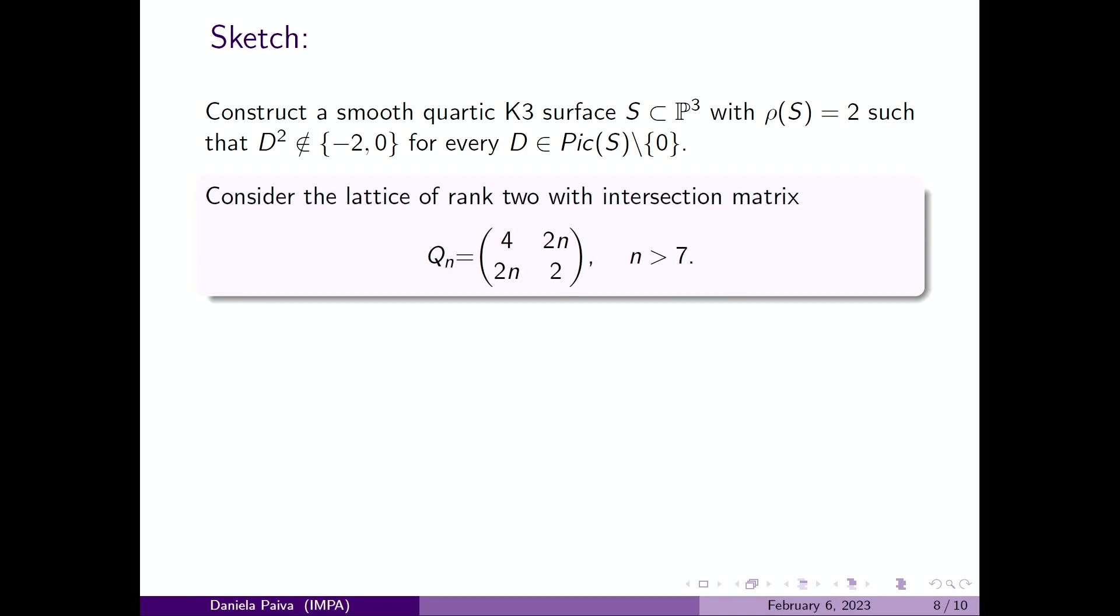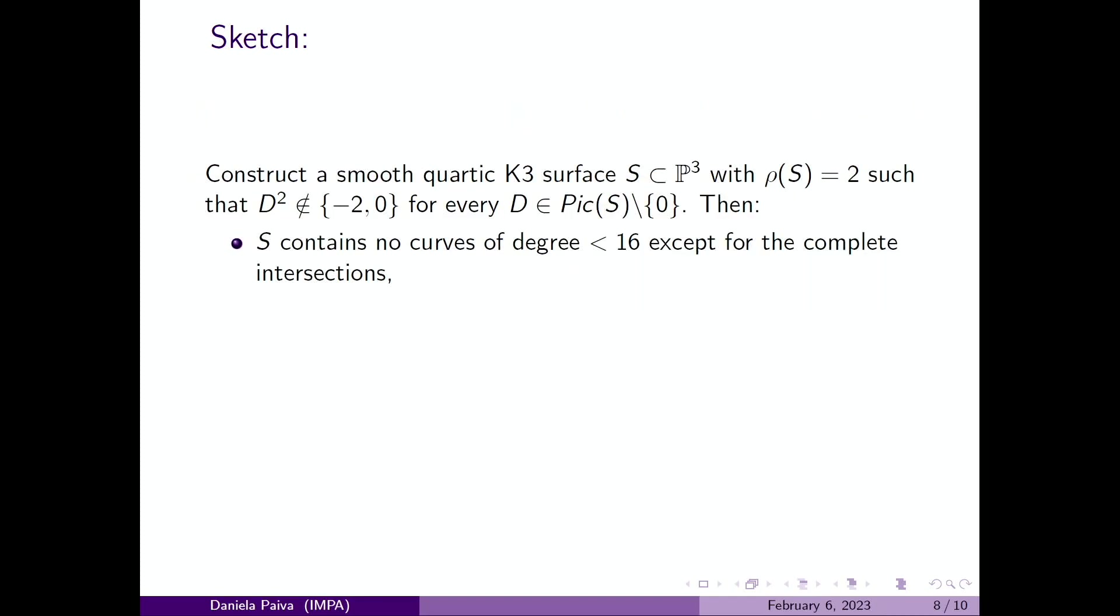The element of the Picard lattice associated to the first generator has self-intersection four, so we can prove that it is an ample line bundle. It induces an embedding from S to P³, so S is in fact a quartic surface in P³. We prove also that S contains no curves of degree less than 16 except the complete intersections. We also prove that the automorphism group is the infinite dihedral group.